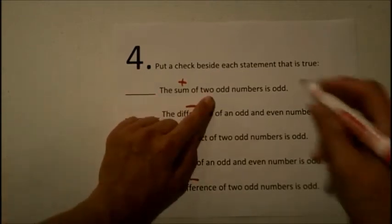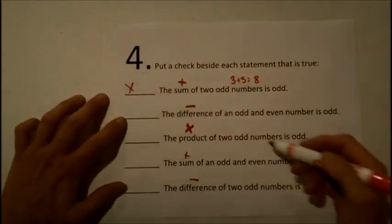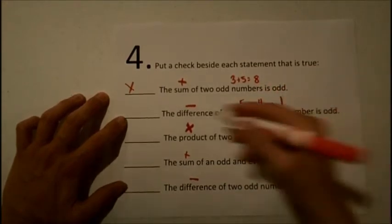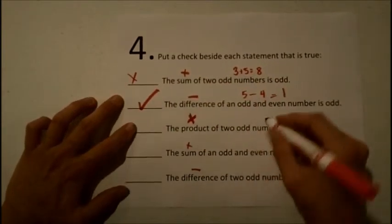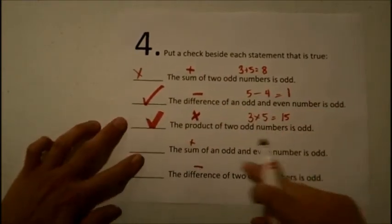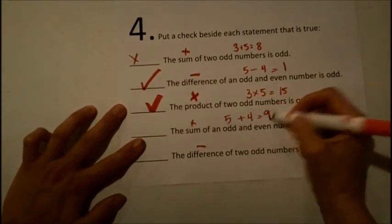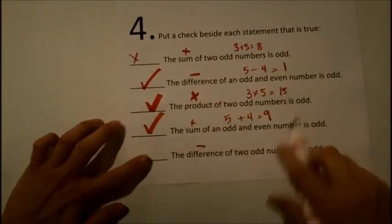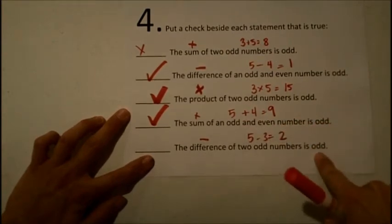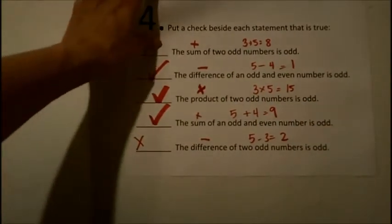So I'm going to add two odd numbers. For example, 3 plus 5, and I get an even number. So this one is not true. The difference of an odd and an even number is, in fact, odd. I get an odd answer, so we would check that one. The product of two odd numbers, let's try 3 and 5, is 15, and that is odd. The sum, that's adding, of an odd and even, let's do 5 plus 4, is odd. Yes, 9 is odd. And the difference of two odd numbers, let's do a 5 and a 3, is a 2. That says odd. Well, it's actually even, so that's wrong. So we should have put a check beside the second, third, and fourth questions, or statements.